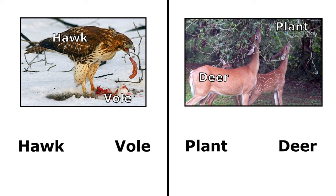Here on the left you can see that the vole is being eaten by the hawk, so my arrow needs to show that the energy is being transferred from the vole to the hawk. And on the right I have deer eating a plant, so energy is going to go from the plant to the deer. My arrow is always going to point toward the organism that's doing the eating.